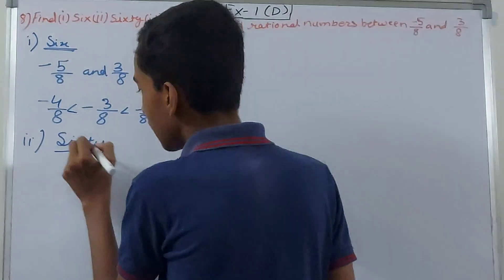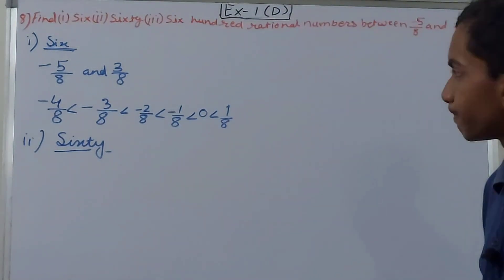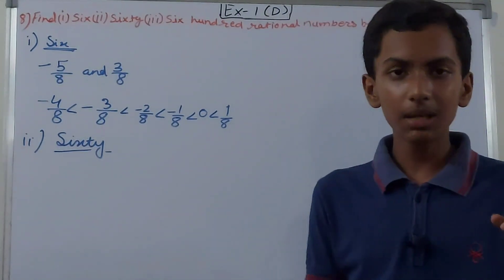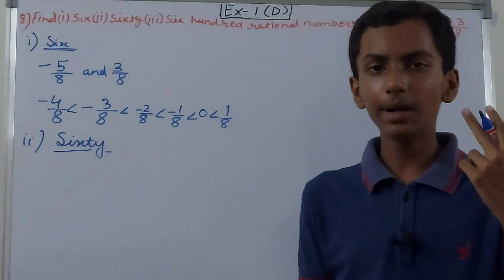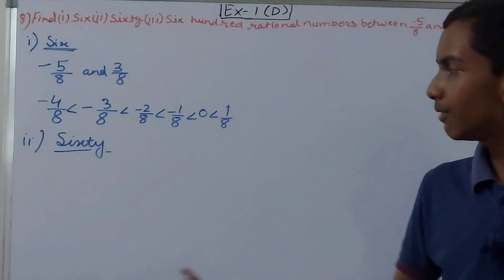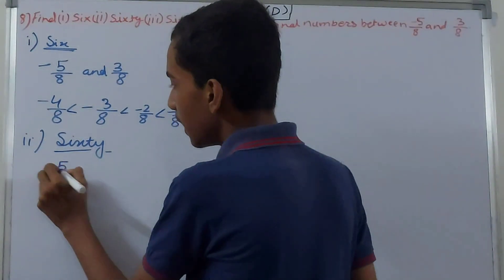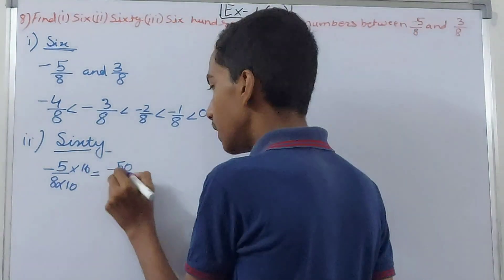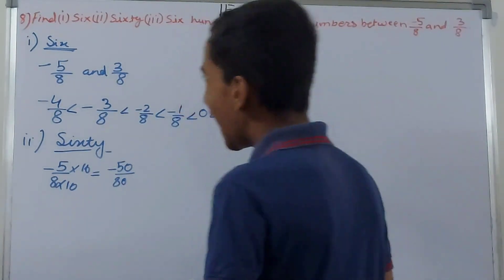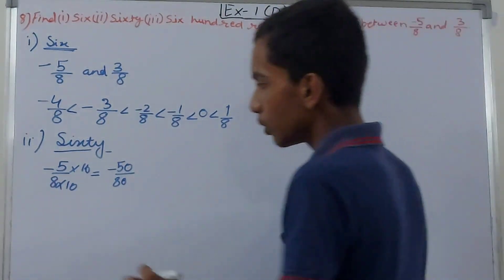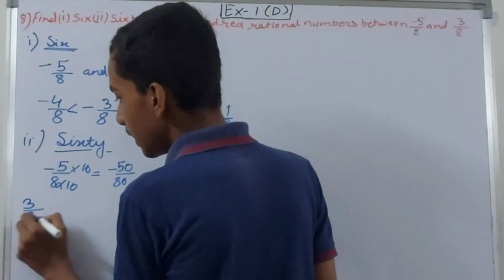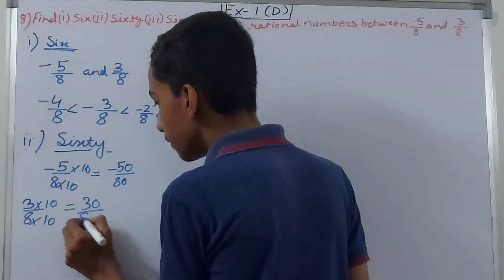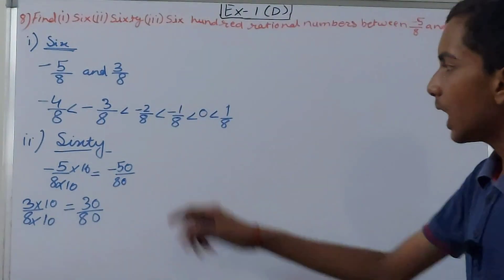To find 60 rational numbers between these two, we multiply by 10 to create equivalent rational numbers. So -5/8 multiplied by 10/10 gives -50/80, and 3/8 multiplied by 10/10 gives 30/80.